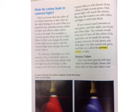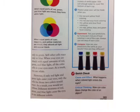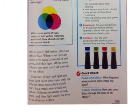Seeing colors. Our eyes have special cells that react to colors of light. Some cells react only to red, and others react only to green. Still other cells react only to blue. When your eyes are struck with equal amounts of red, green, and blue light, all the color cells in your eyes react. As a result, you see white.